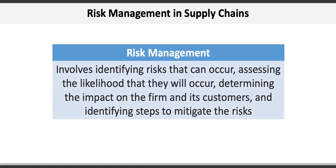Risk management involves identifying risks that can occur, assessing the likelihood that they will occur, determining the impact on the firm and its customers, and identifying steps to mitigate the risks. Supply chain risk can fall into one of two general categories: tactical risk and strategic risk.